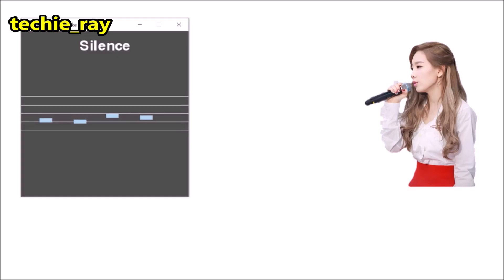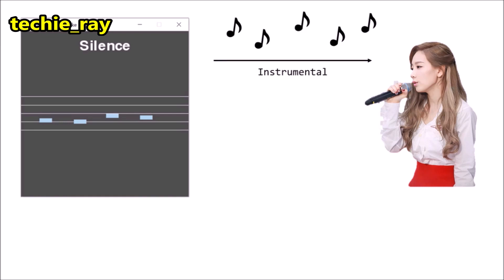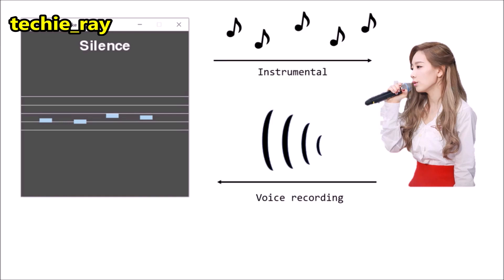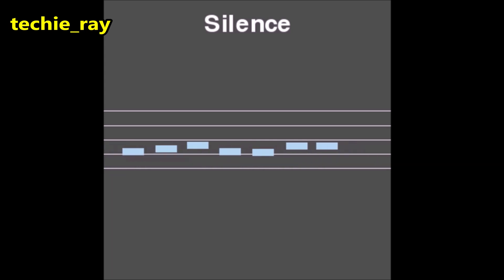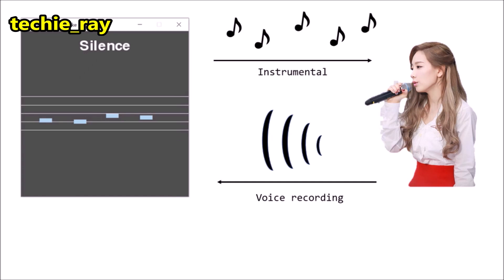Now let's quickly talk about the interface. During a karaoke session, the app will play the instrumental version. At the same time, it will activate the microphone on the computer and record our singing. The app also displays the pitches of the reference song flowing like a river, kind of like Guitar Hero. Once the song is over, the recording stops and the app sends the recording through stages 1 and 2 of the algorithm, so that we eventually get the pitches and volume of our singing.